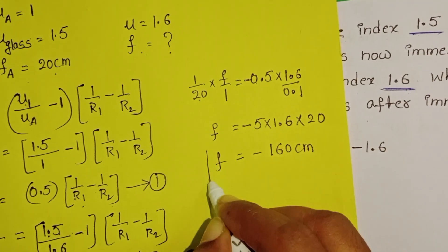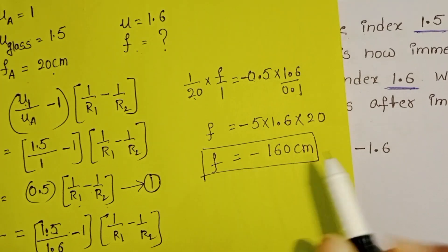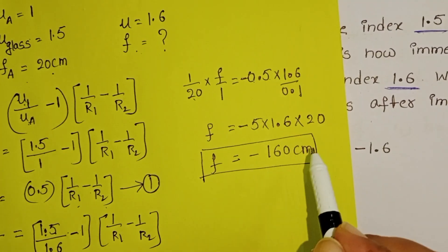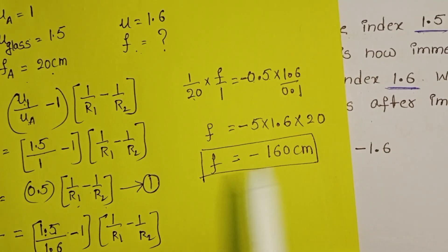This is the focal length of the biconvex lens when it is placed in the liquid medium: −160 centimeters.